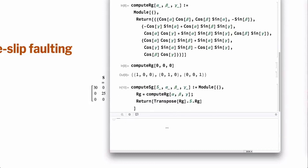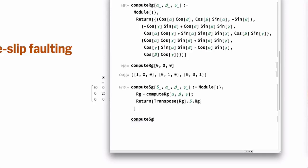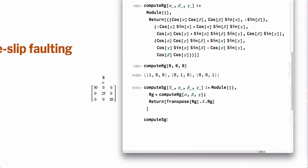So we're going to—the first thing compute SG is going to do is call compute RG. It's going to return a matrix RG and then I can use that to return the transpose of RG times S times RG. So now I have another function, compute SG, and let's now test this function. For our example problem here, our stress field is 30, 25, 20.